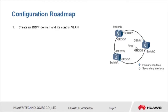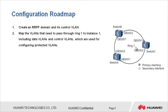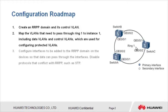The configuration roadmap is as follows. Step 1: Create an RRPP domain and its control VLAN. Step 2: Map the VLANs that need to pass through ring 1 to instance 1, including data VLANs and control VLANs, which are used for configuring protected VLANs. Step 3: Configure interfaces to be added to the RRPP domain on the devices so that data can pass through the interfaces. Step 4: Disable protocols that conflict with RRPP, such as STP.